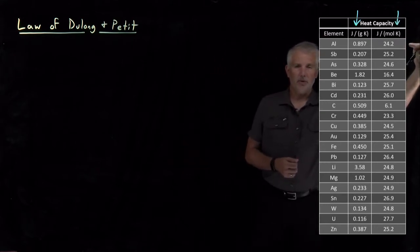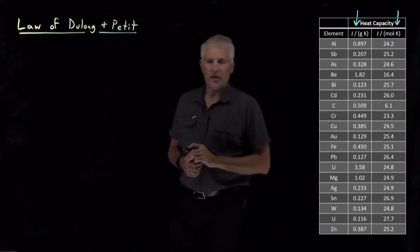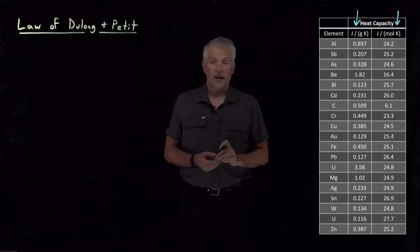If we look on this side of the table, most of these values are either 24, 25, 26 joules per mole Kelvin. So nearly all of those values have the same quantitative value, roughly 25 joules per mole Kelvin.